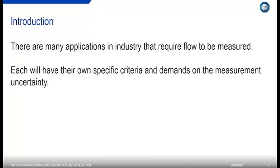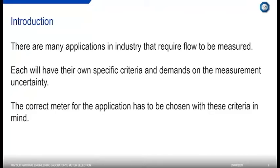Measurement uncertainty is a term many of you may know — essentially it relates to accuracy, i.e., how good a measurement you're looking for. If you have a high-value product such as oil or a pharmaceutical product, you want it measured with very low uncertainty to minimize errors. Different applications will have different measurement uncertainty requirements, and that has to be taken into account when picking a flow meter. There's no point picking the best meter if you don't need the best measurement uncertainty, and vice versa.